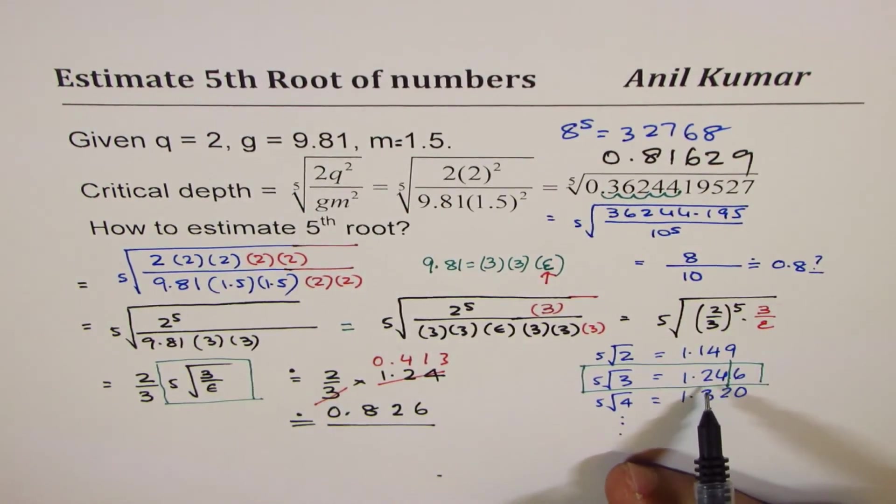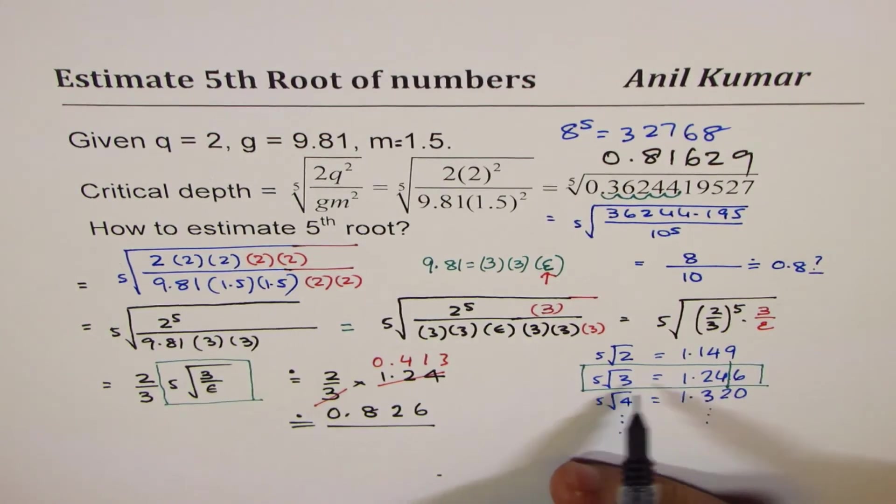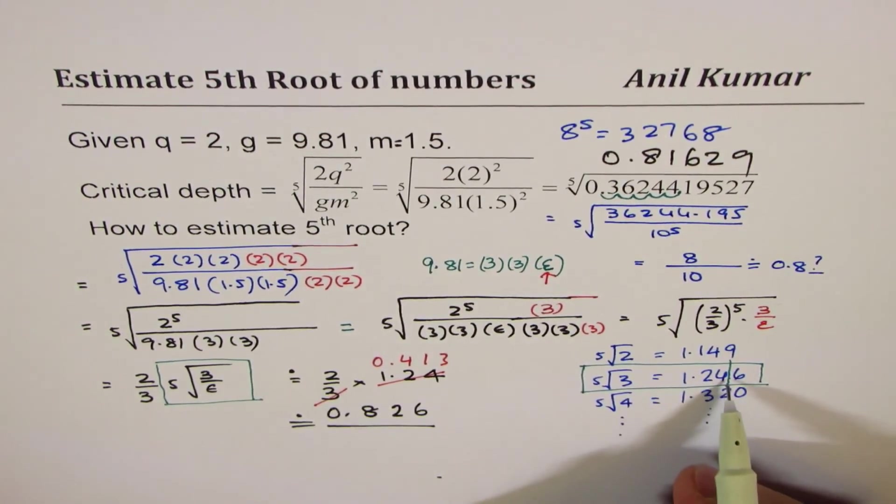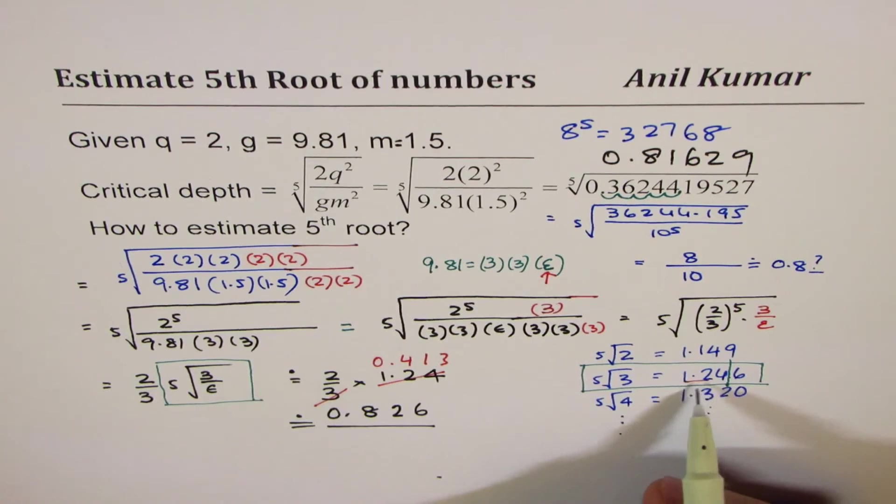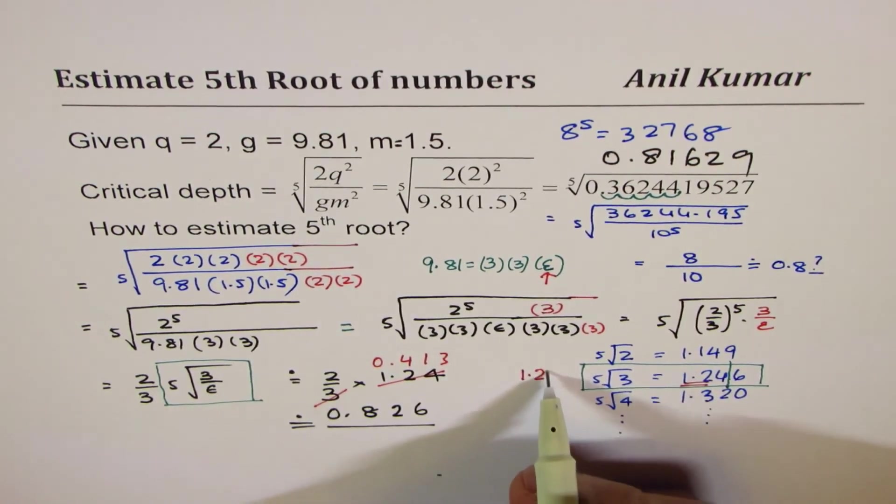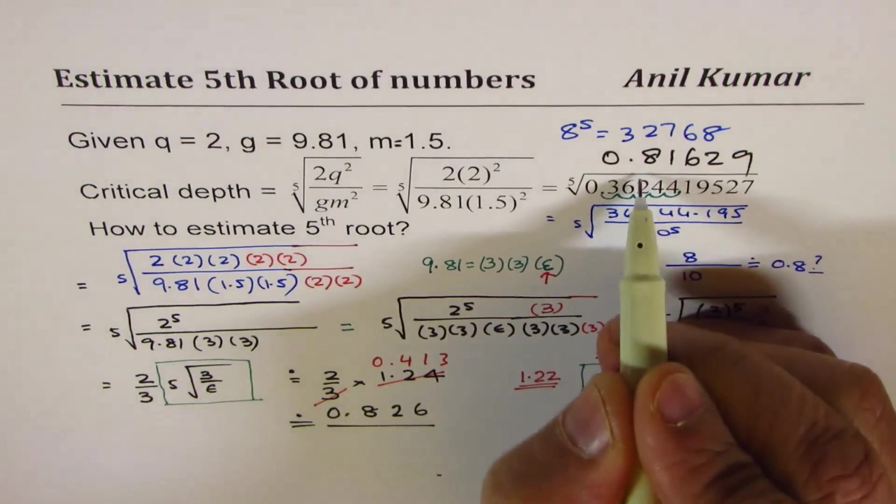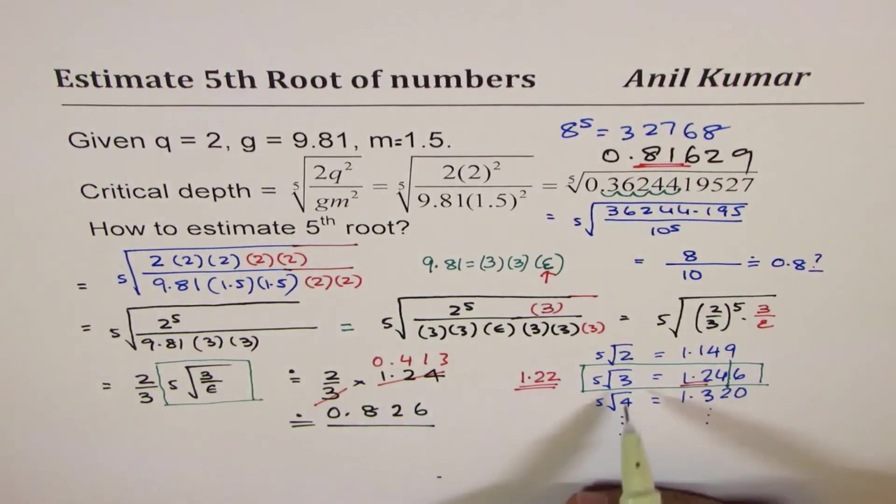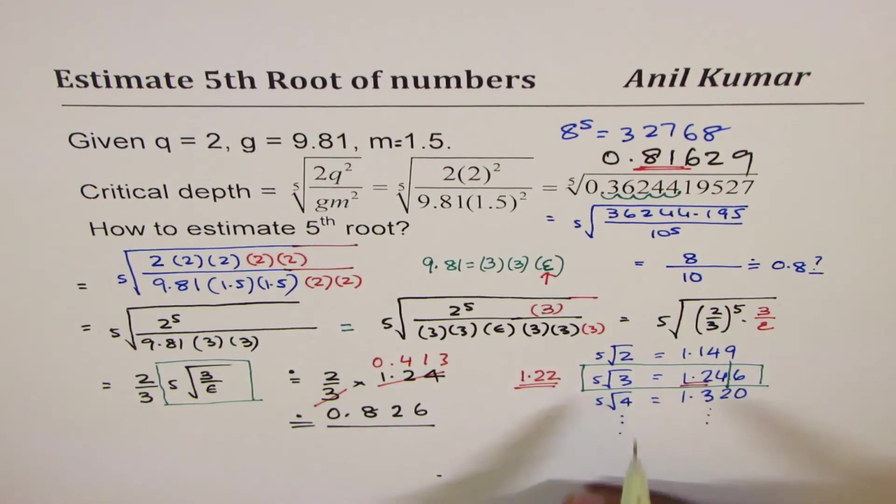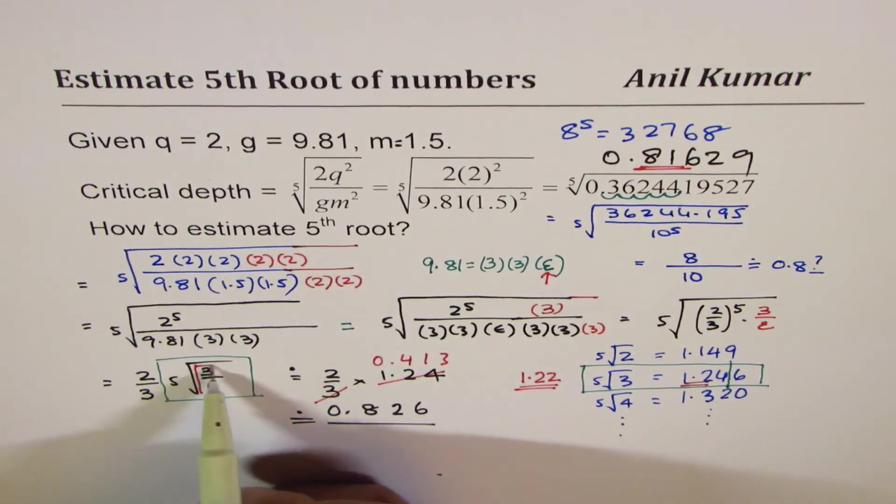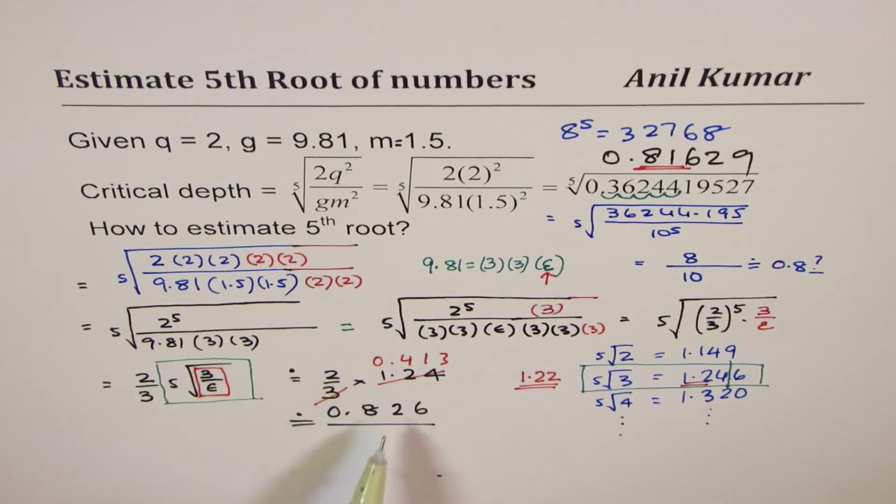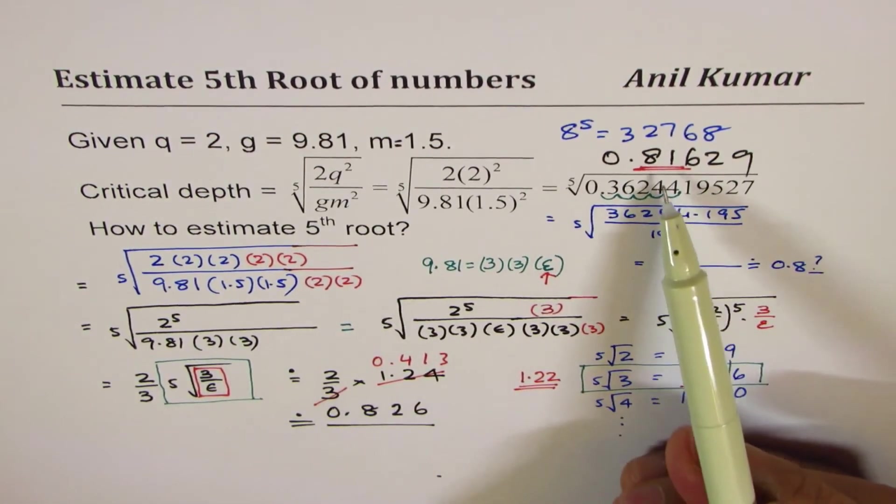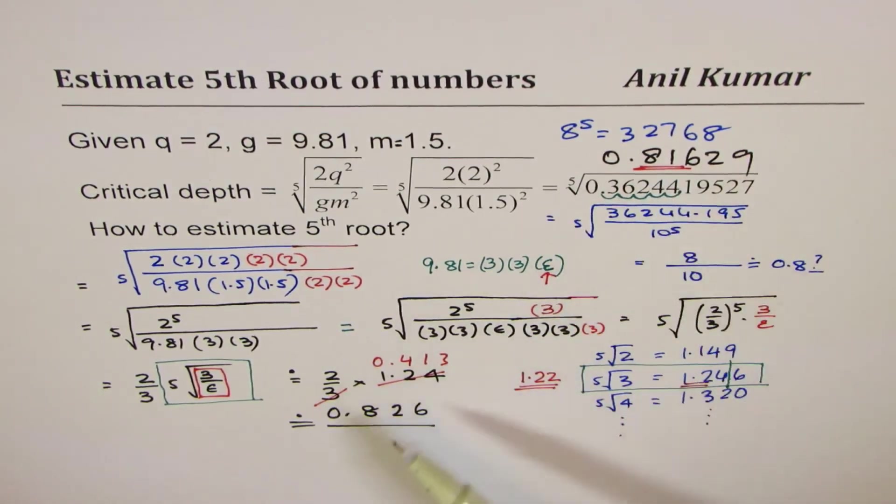What do we get? We get 0.2826. Since we did an estimate here, if you would have estimated this as, instead of—I rounded it here—if you would have estimated this as, let us say, 1.22, you might have got a better result closer to this value. So it all really depends on how you estimate this number. This estimate results into a small error as you can see, and that is the whole idea of estimating.